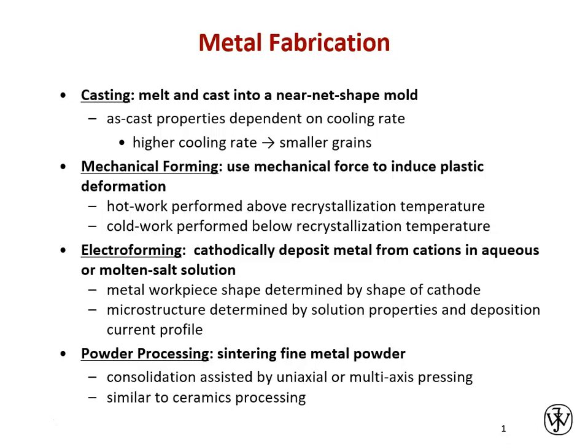In mechanical forming we use mechanical force to induce plastic deformation and get the material to literally flow plastically into the shape we want. Those techniques include extrusion, wire drawing, rolling, and near-net-shape forming into a mold — open or closed die. This can be done hot when we need large reductions in a single pass or to fill a very intricate mold and hold tight tolerances. Cold forming — processing below recrystallization temperature — allows us to achieve strengthening and forming at the same time.